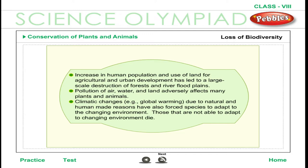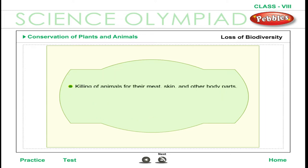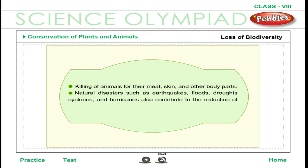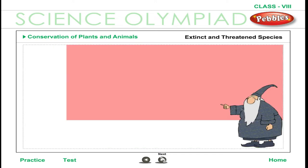Pollution of air, water, and land adversely affects many plants and animals. Climatic changes due to natural and human-made reasons have also forced species to adapt to changing environments. Killing of animals for their meat, skin, and other body parts, as well as natural disasters such as earthquakes, floods, droughts, cyclones, and hurricanes, also contribute to the reduction of plant and animal species.